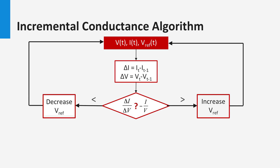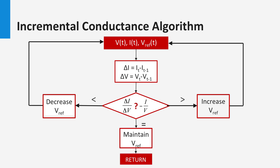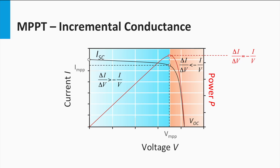Conversely, if the incremental conductance is lower than the negative of the instantaneous conductance, the current operating point is to the right of the maximum power point and the reference voltage is decremented. This process iterates until the incremental conductance equals the negative of the instantaneous conductance, in which case the chosen reference voltage equals the maximum power point voltage. This MPPT algorithm can be more efficient at the maximum power point, as it doesn't hover in the MPP region under steady state like the P&O algorithm.